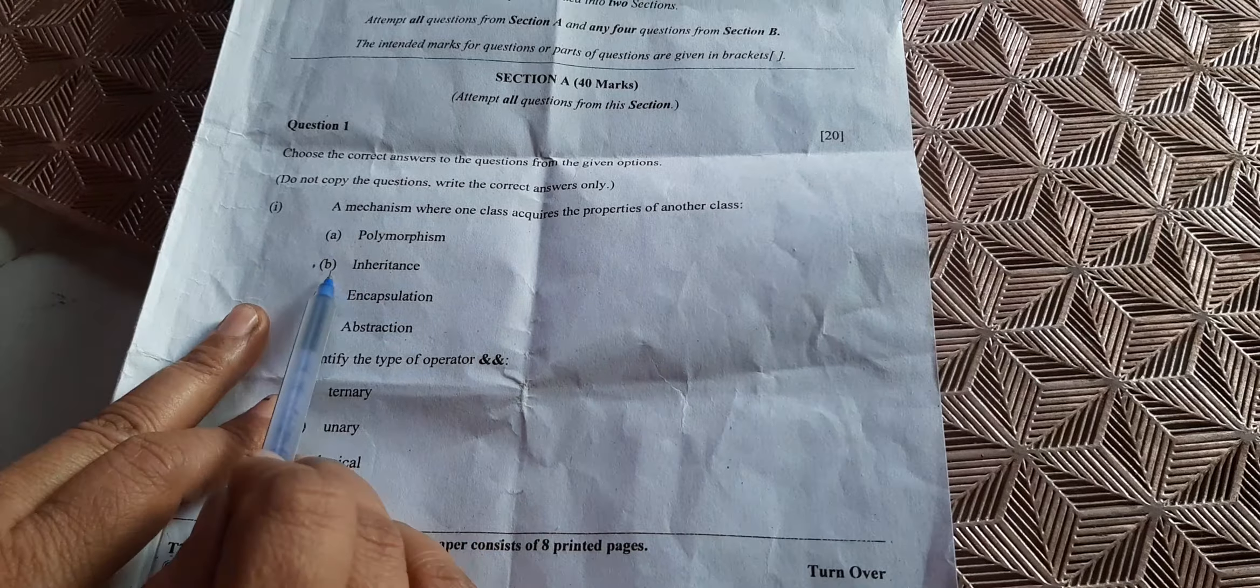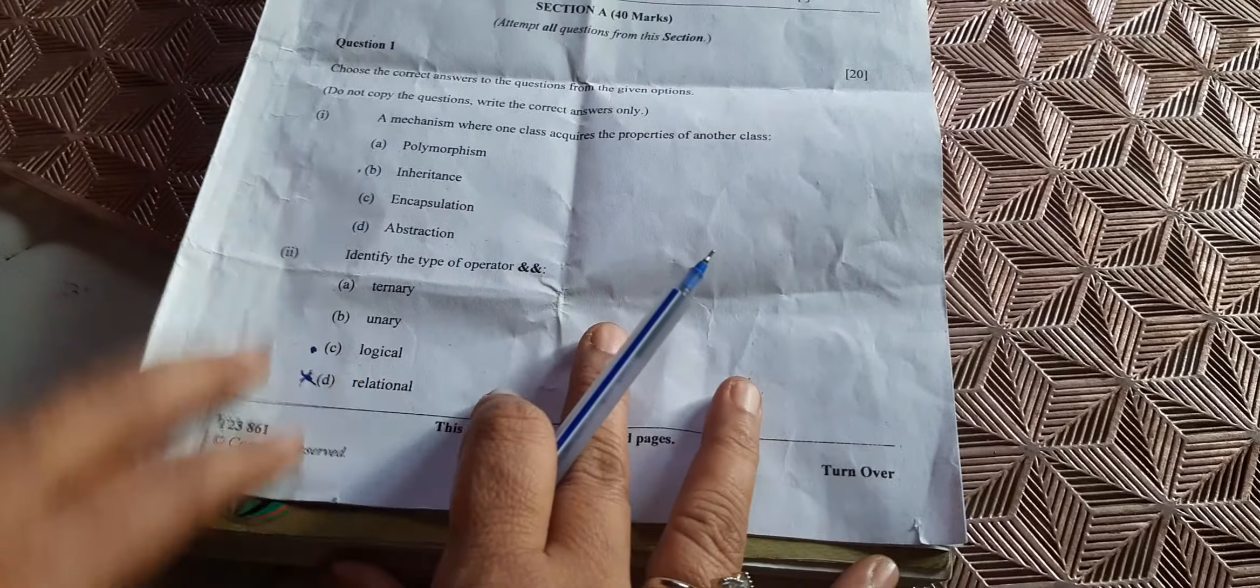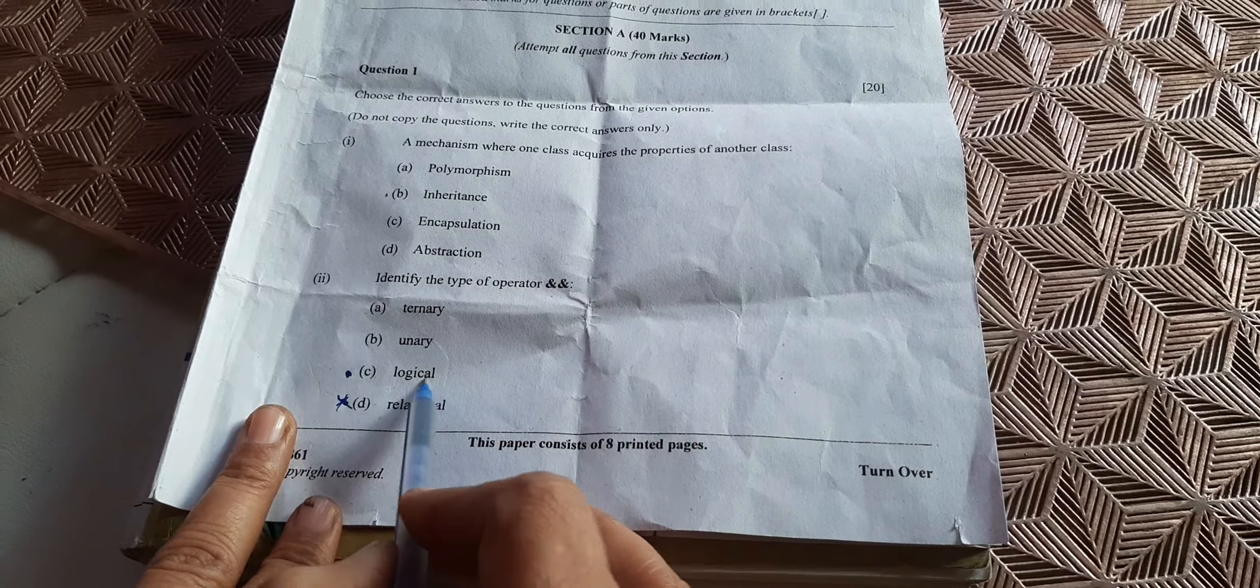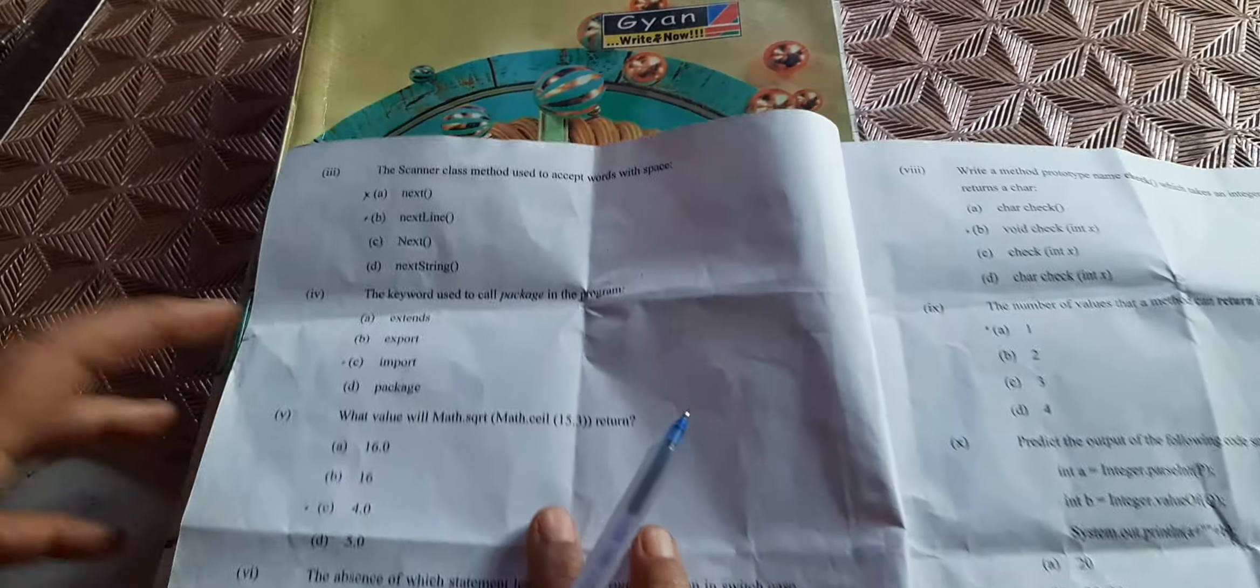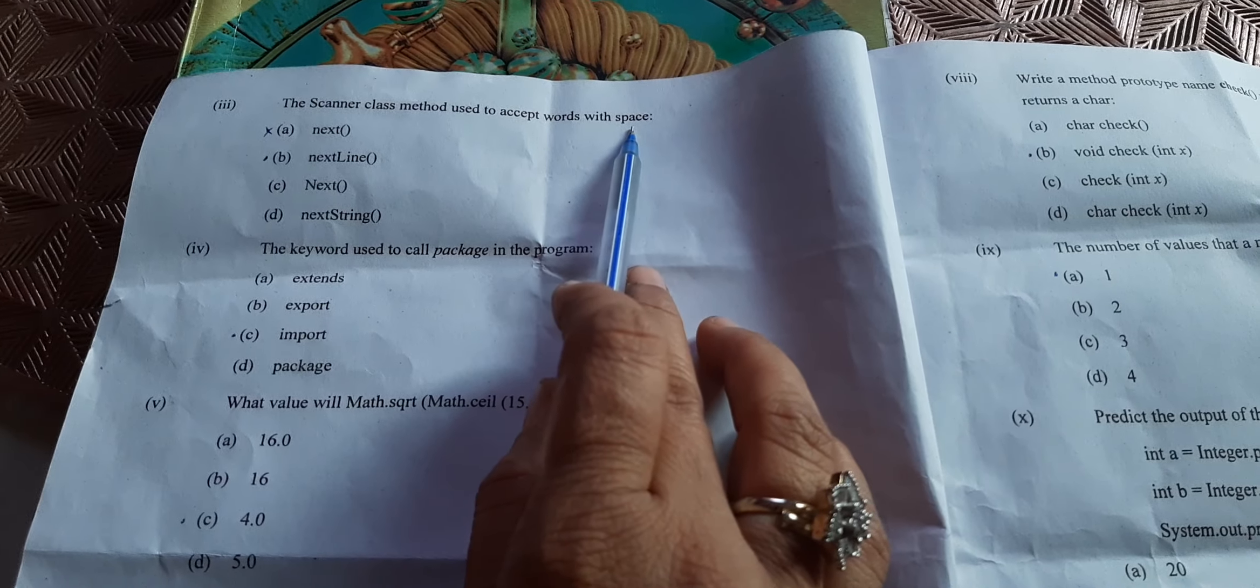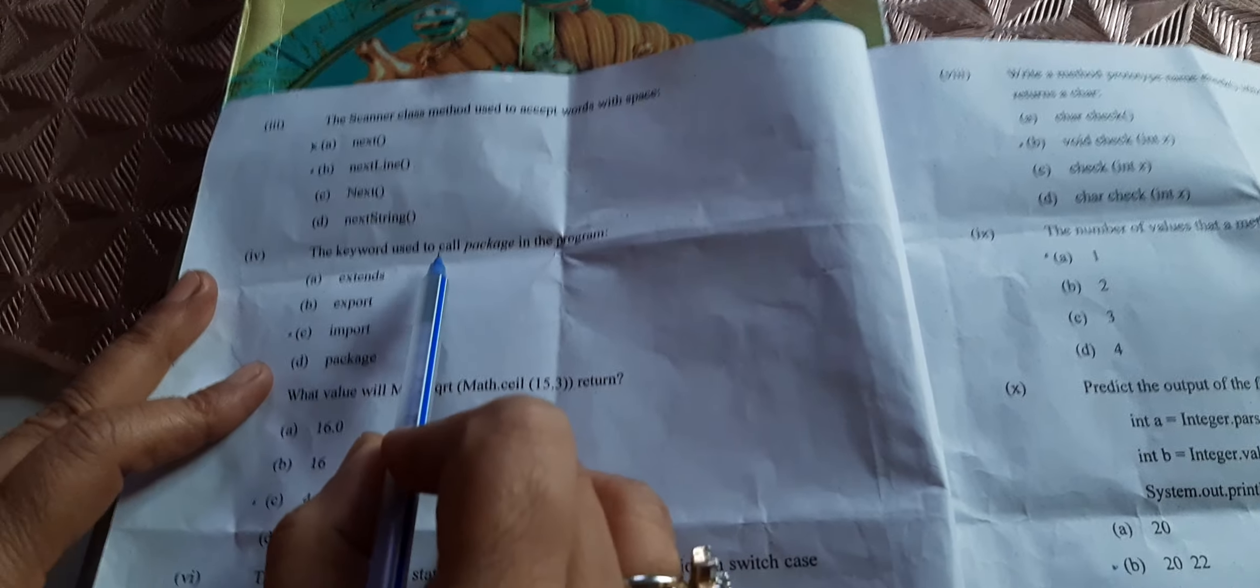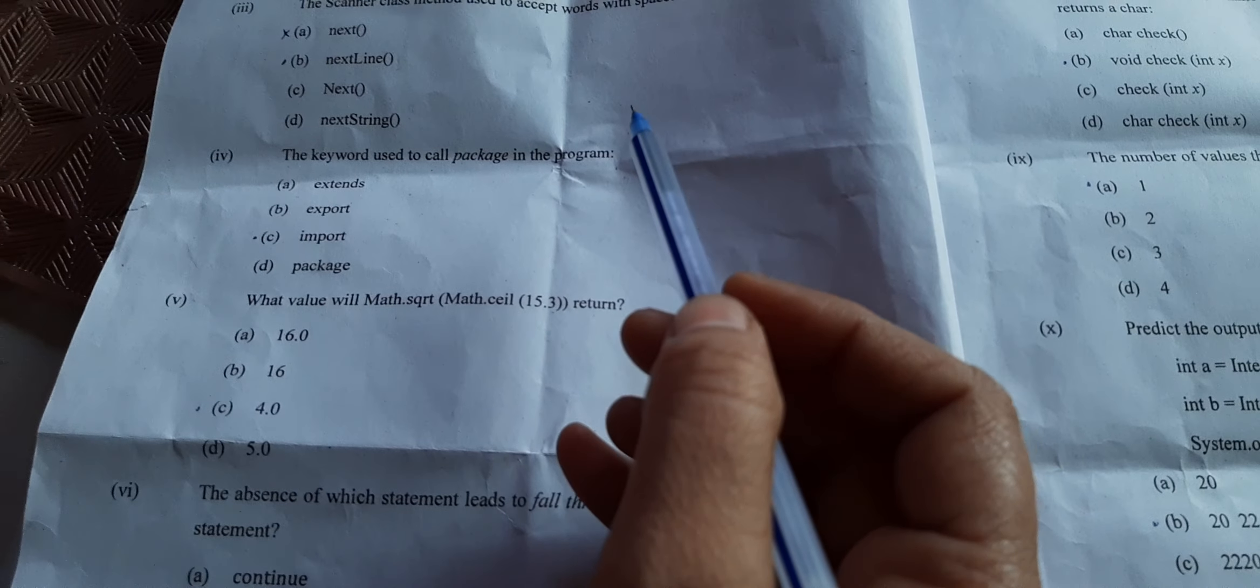First question: mechanism where one class acquires the property of another class. That OOP principle is inheritance. Next, identify the type of operator. This ampersand sign is a logical operator when we combine conditions. Which Scanner class method is used to accept words with space? Without space will be next, but with space we use nextLine.